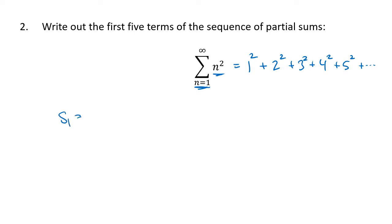So s₁ will just be the first term, which is 1. s₂ will be the sum of the first two terms, that's 1 plus 4, which is 5. s₃ will be 1 plus 4 plus 9, which is 14. s₄ is 1 plus 4 plus 9 plus 16, that'll be 30. And then finally s₅ will be 1 plus 4 plus 9 plus 16 plus 25, which will be 55. And that's it.